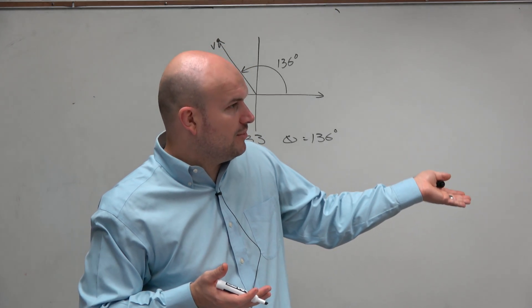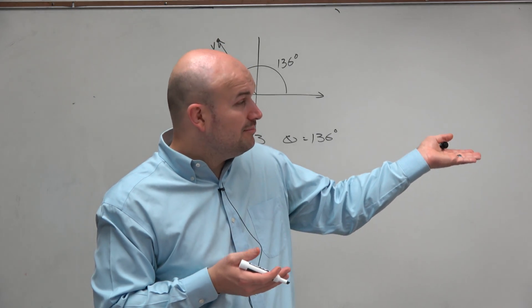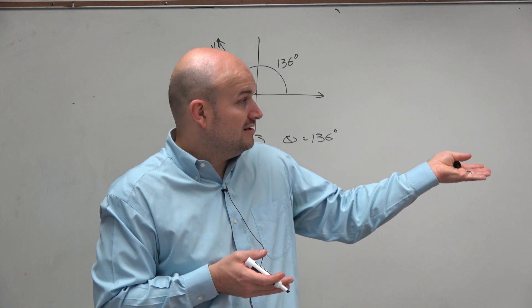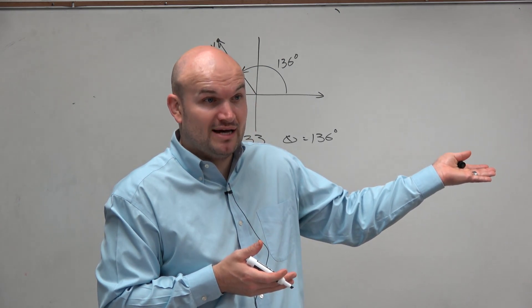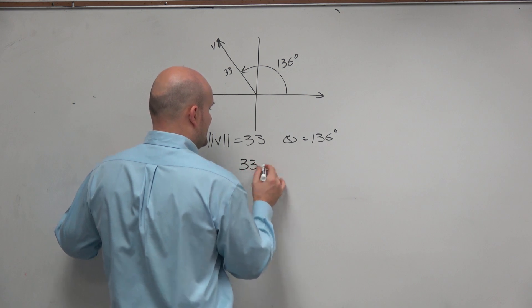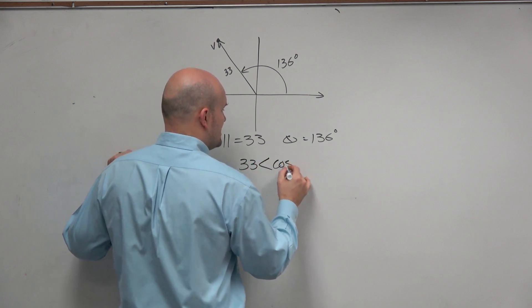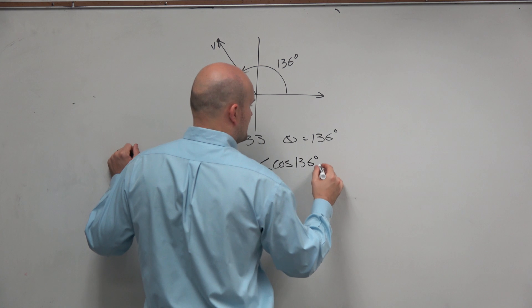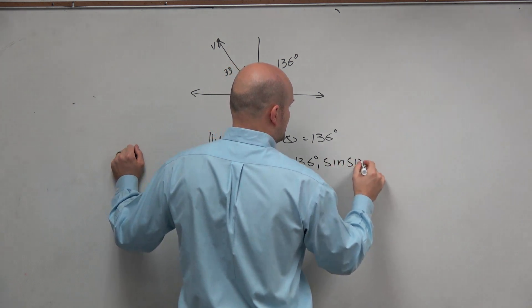Using it in component form or as a linear combination is not really helpful. But form 2 has everything we need. It says the magnitude multiply the cosine of theta times sine of theta. So all I simply have is 33 times the cosine of 136 degrees, sine of 136 degrees.